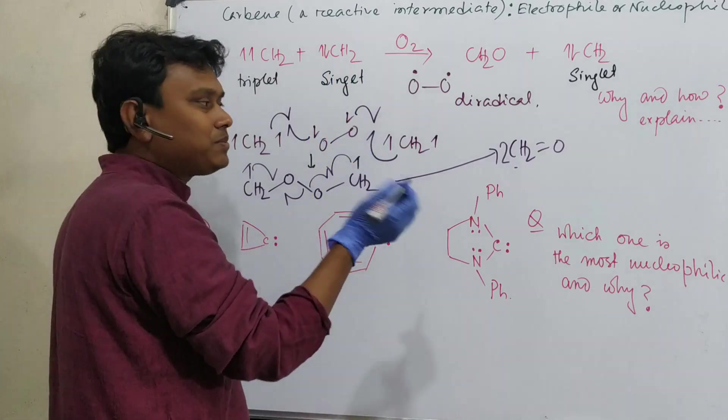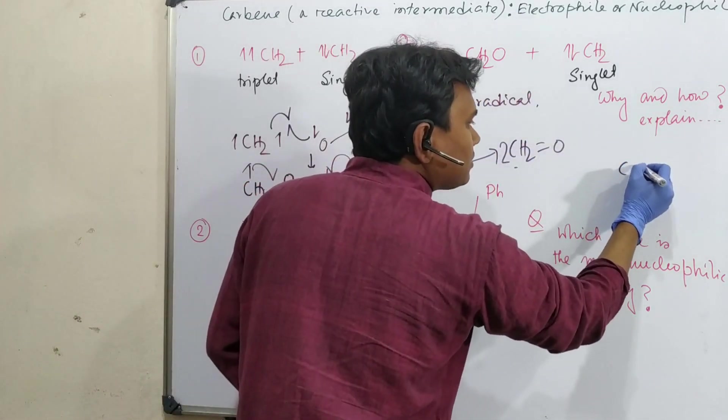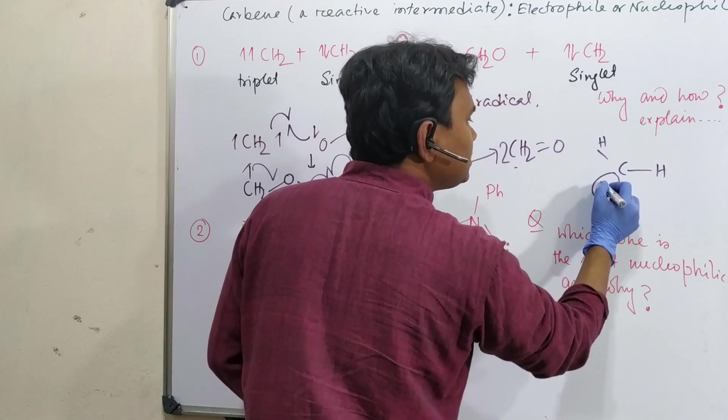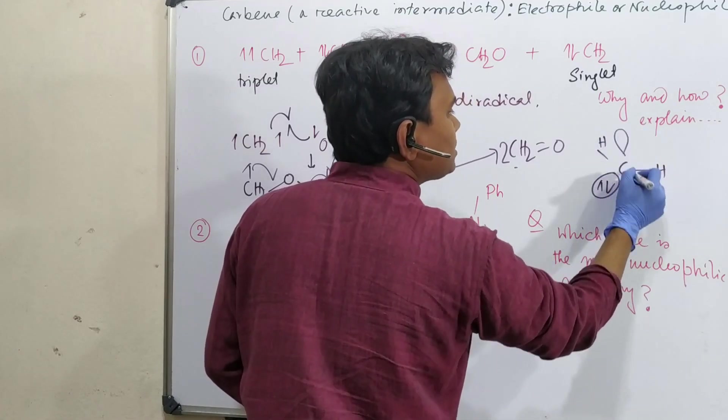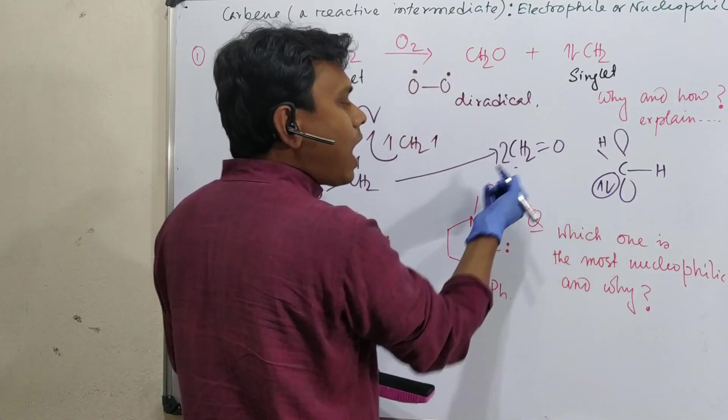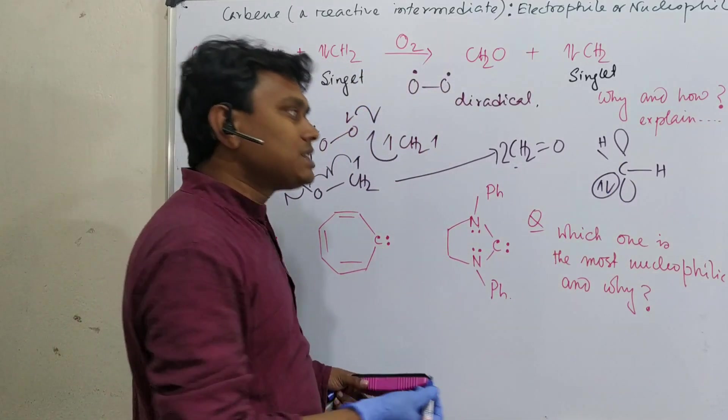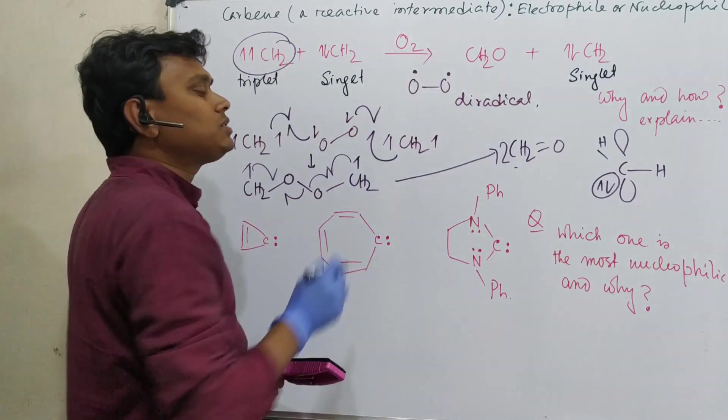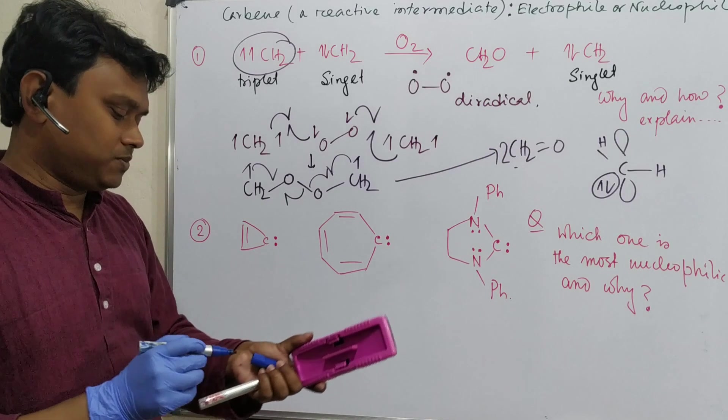Now singlet does not react because it has vacant p orbital. So how can one electron interact? That is difficult. But here it is possible for triplet. That is why it is reacting with triplet only.